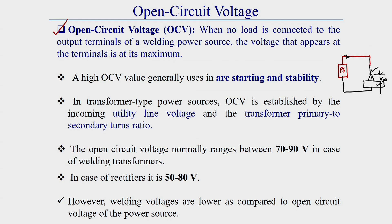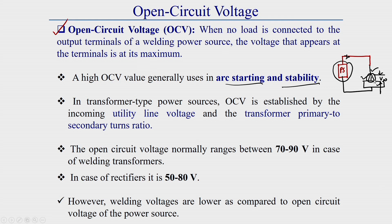A high open circuit voltage is used for arc starting and arc stability — if OCV is higher, the arc can be generated easily and remains stable. For a transformer-type power source, OCV is in the range of 70 to 90 volts; for a rectifier, it is normally within 50 to 80 volts. The welding voltage is very low compared to open circuit voltage.